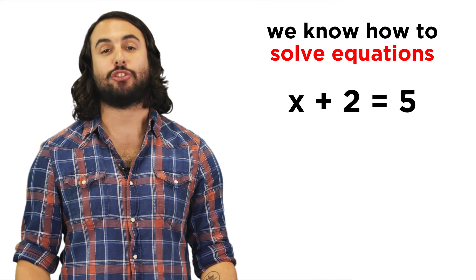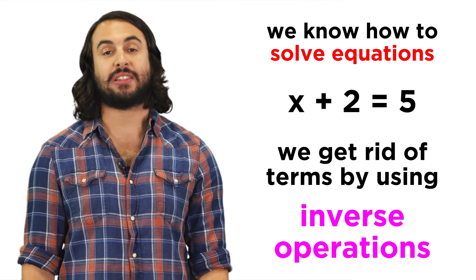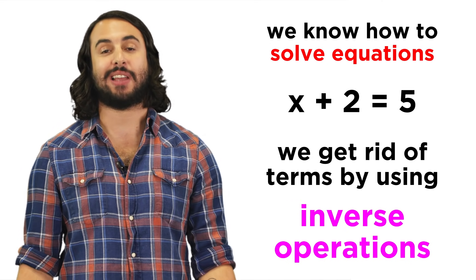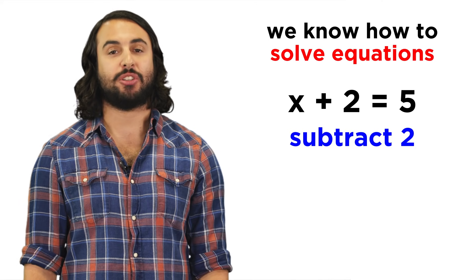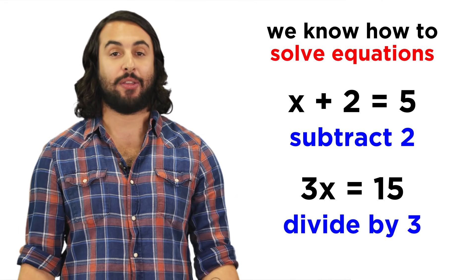We've learned how to solve simple algebraic equations. We just look at what is happening to the variable we want to solve for, and we do the inverse of that operation to both sides. If we have x plus two, we subtract two. If we have three x, we divide by three.